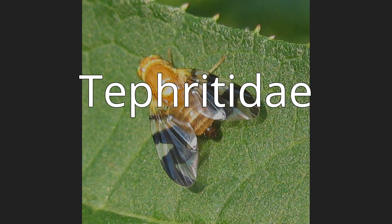Nearly 5,000 described species of Tephritid fruit fly are categorized in almost 500 genera of the Tephritidae. Description, recategorization, and genetic analyses are constantly changing the taxonomy of this family. To distinguish them from the Drosophilidae, the Tephritidae are sometimes called peacock flies in reference to their elaborate and colorful markings. The name comes from the Greek tephros, meaning ash gray.